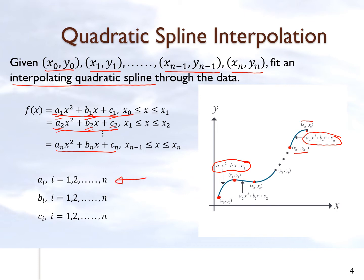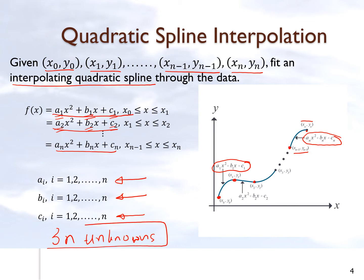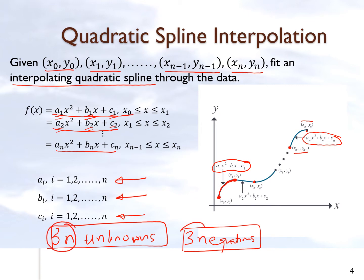So we have n of the a's, n of the b's, and n of the c's — that means we have 3n unknowns. Since we have 3n unknowns, it makes sense that we have to find 3n equations. It's not easy like in linear spline interpolation where just by looking at two consecutive points we could find the unknowns, because here each spline goes through two points giving only two equations, but we have three unknowns per spline.